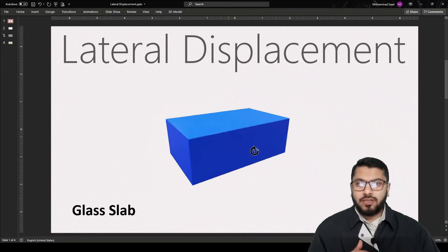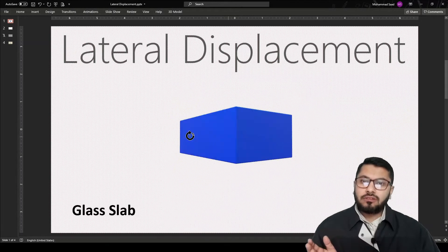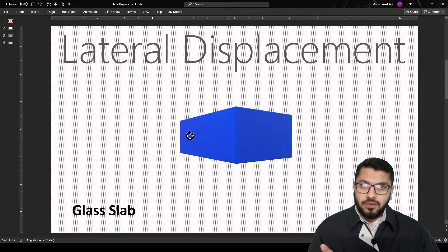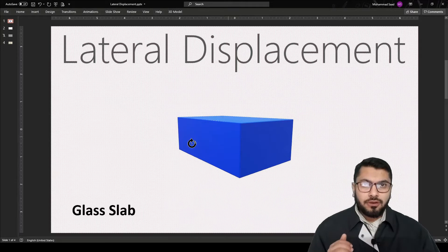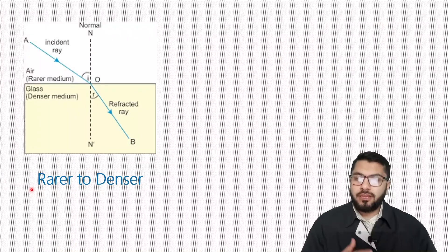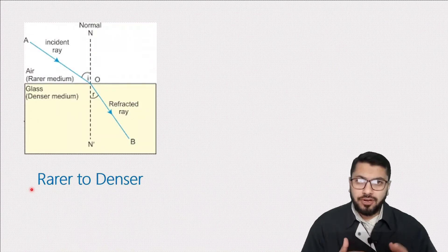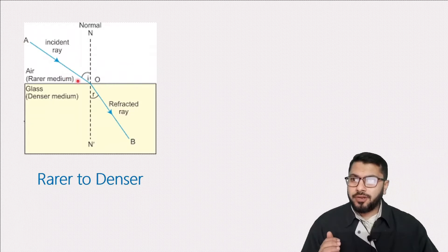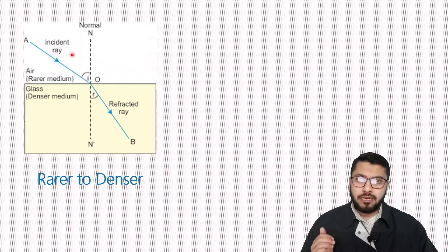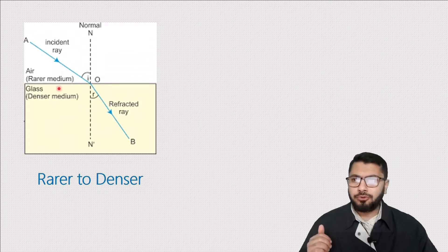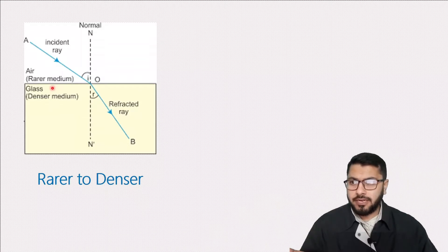It has six faces. Now we will see the rules of refraction when light goes from a rare medium to a denser medium and denser medium to a rare medium. In case number one, which we have already studied: when a light ray comes from a rare medium and goes into a denser medium — that means coming from air and going into glass — the denser medium is glass.